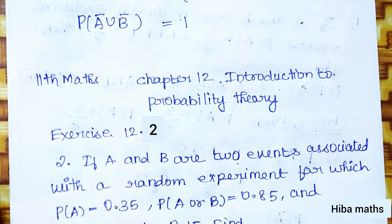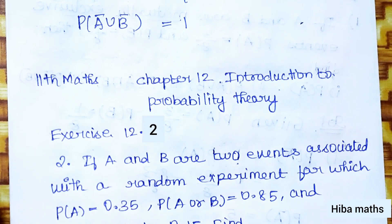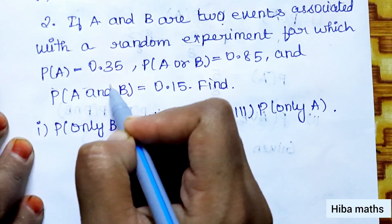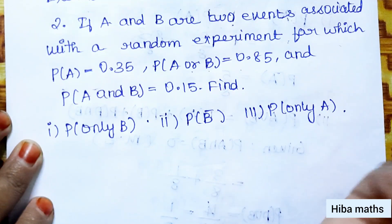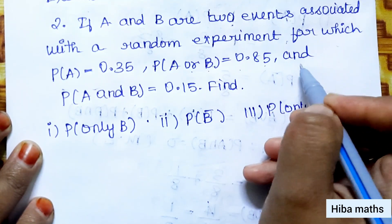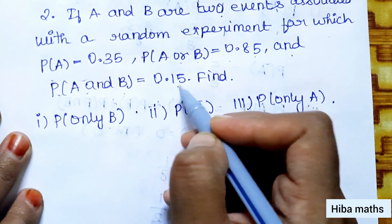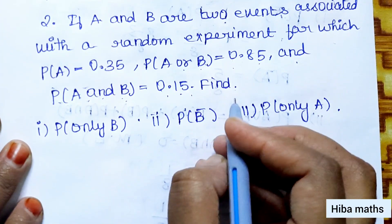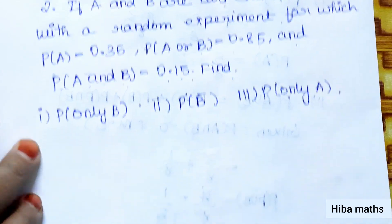Hello students, welcome to Hiba Maths. 11th Standard Math Chapter 12 Introduction to Probability Theory Exercise 12.2, second question. If A and B are two events associated with a random experiment for which P(A) equals 0.35, P(A union B) equals 0.85, and P(A intersection B) equals 0.15, now find the following.